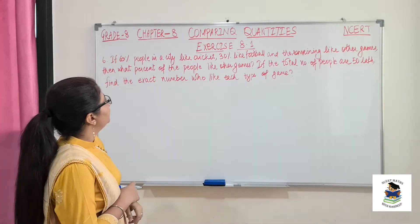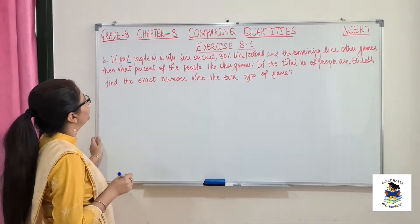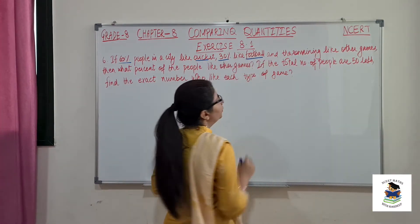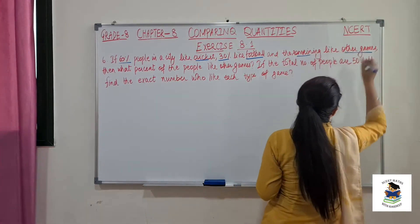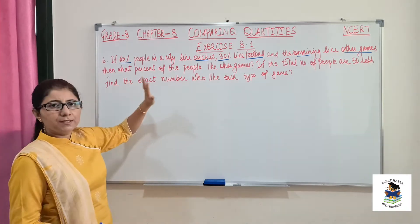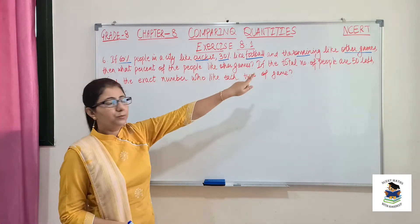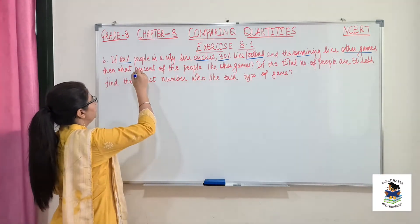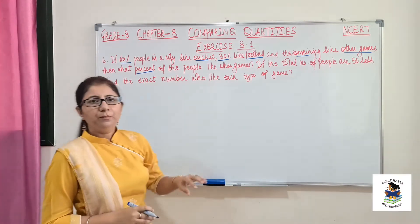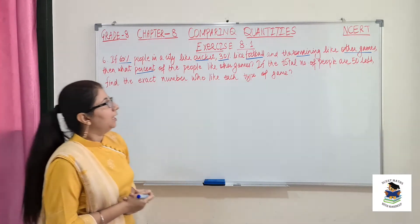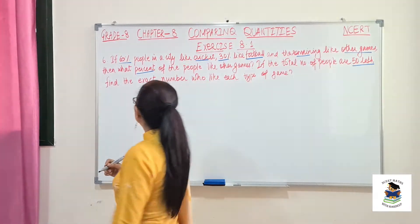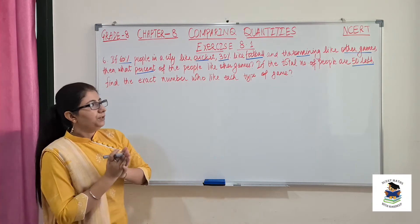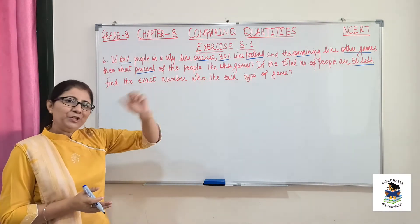If 60% of people in a city like cricket, 30% like football, and the remaining like other games — we need to find what percent of people like other games. The total number of people is 50 lakh, and we also need to find the exact number who like each type of game.